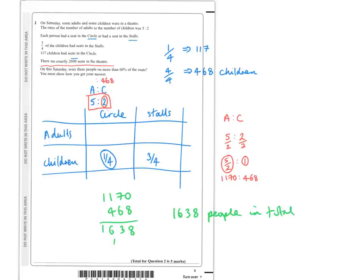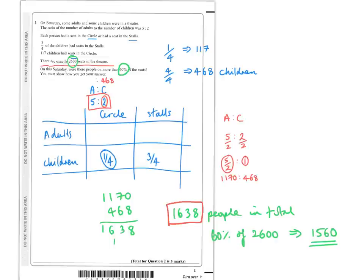We've got to work out whether 60% of the seats were taken on that Saturday. There are 2,600 seats in the theatre. 60% of 2,600: we times 2,600 by 0.6, which is 1,560. We've worked out there were 1,638 people in total, so yes, more than 60% of seats were taken.